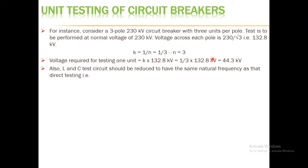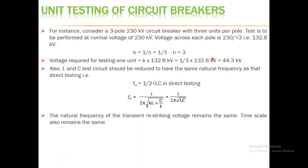Also, the L and C of the test circuit should be reduced to have the same natural frequency as that of direct testing. In direct testing, FN = 1 / (2π √(LC)). In unit testing with scaling, FN = 1 / (2π √(KL × C/K)) = 1 / (2π √(LC)). So the natural frequency of the transient restriking voltage remains the same, and the time scale also remains the same, as confirmed by this equation.